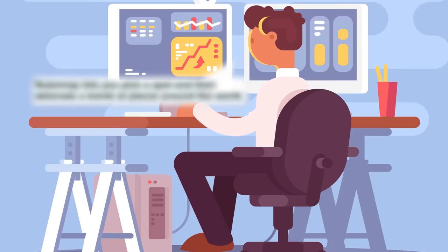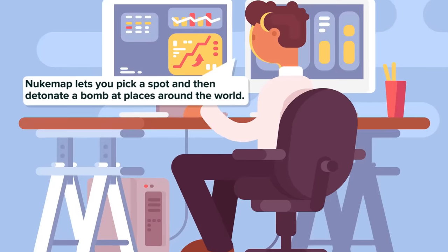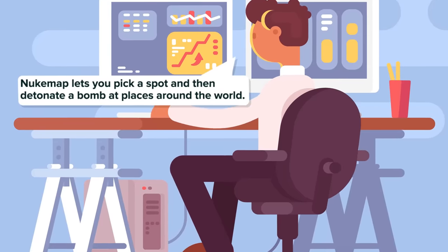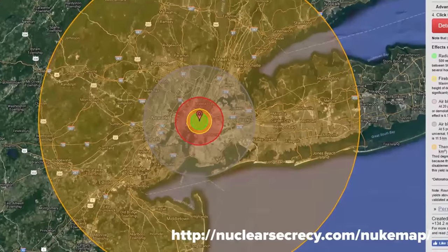Nuke Map, which was created by American nuclear historian Alex Wellerstein, actually lets you pick a spot and then detonate a bomb at places around the world. We chose Manhattan, and we also chose the Tsar bomb. The bomb would have a fireball of about 5 miles,